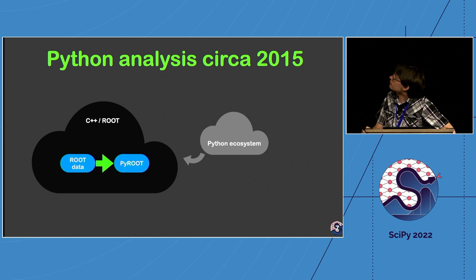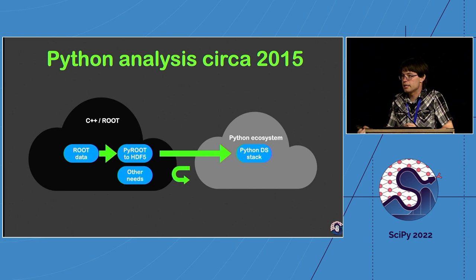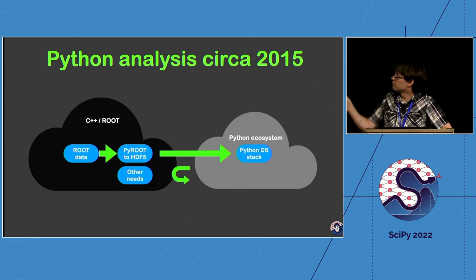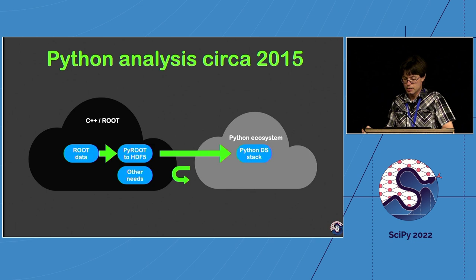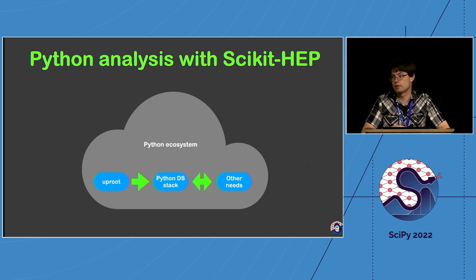Around 2015, a typical data analysis stack meant having ROOT data which you'd read into PyROOT — a Python ecosystem you had to fight with. Another approach was to convert ROOT data to some other format, use it inside the data science stack, and occasionally go back and forth between these two worlds. What you'd really like — and what scikit-hep was trying to provide — was a way to live entirely inside the Python ecosystem and do your entire analysis inside a conda or virtual environment.